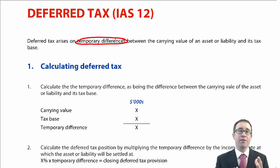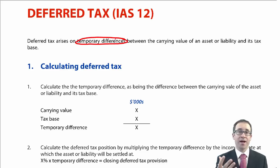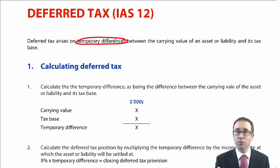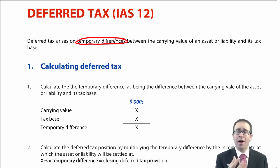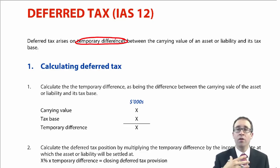Remember, the carrying value is the value of the asset or liability under IFRS, and the tax base is essentially what the value of the asset or liability would be under the tax rules. That's it in its most simplistic format. The standard provides more detail, but thinking of it this way makes life much easier.